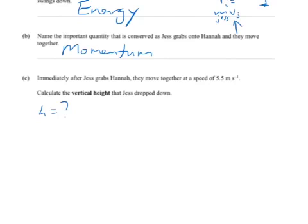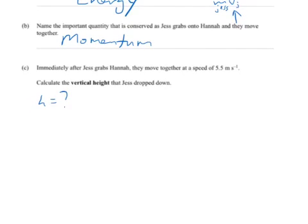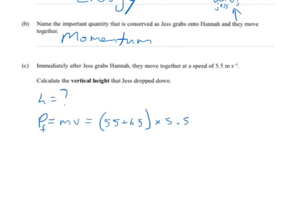Let me work through that as quickly as I can. This is the final momentum of the two after the collision. It's the sum of their masses times the velocity of the combined group, and it's 660 kilogram meters per second. That equals the initial velocity before the collision, which is just the velocity of Jess, and we'll calculate that now.